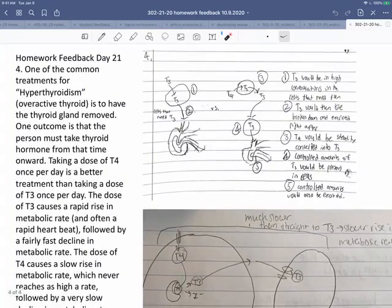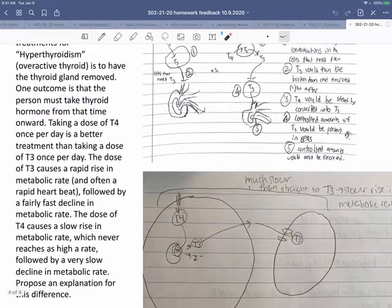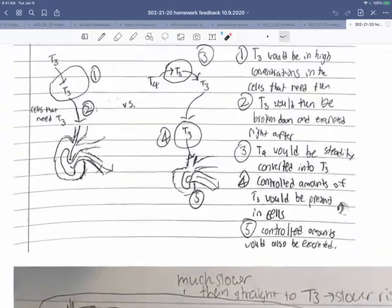The last one was a common treatment for hyperthyroidism and overactive thyroid is to have it removed. That means that person must take thyroid hormone, and it turns out that a dose of T4 once per day is better than treatment of taking T3 once per day. The dose of T3 causes a rapid rise in metabolic rate, and often a rapid heartbeat, and then a fast decline. And T4, on the other hand, gives a slow rise in metabolic rate, never reaches as high, and then has a slow decline. So what might be the cause of the difference?